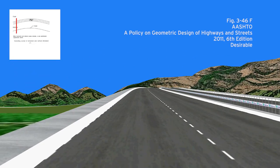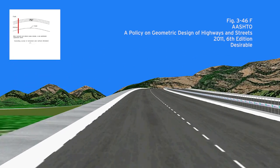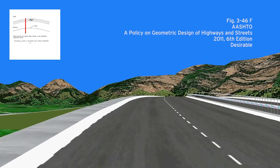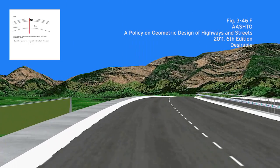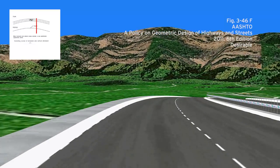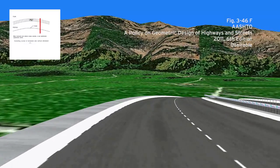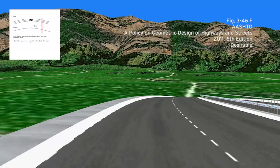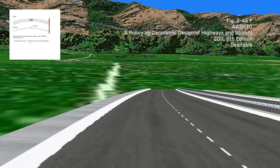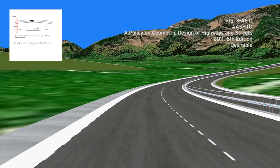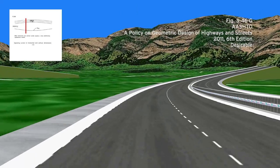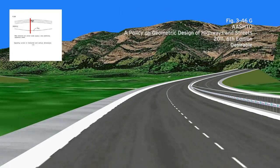The horizontal and vertical curves in Figure F align, creating a satisfactory appearance and design. The horizontal and vertical curves in Figure G oppose each other, which also creates a satisfactory appearance and design.